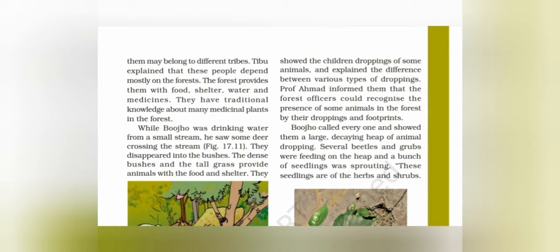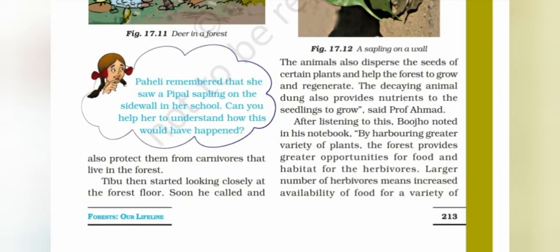By harboring a greater variety of plants, the forest provides greater opportunities for food and habitat for herbivores. A larger number of herbivores means increased availability of food for a variety of carnivores. The wide variety of animals helps the forest to regenerate and grow — animals help to disperse seedlings throughout the forest, and microorganisms provide humus and a favorable atmosphere.